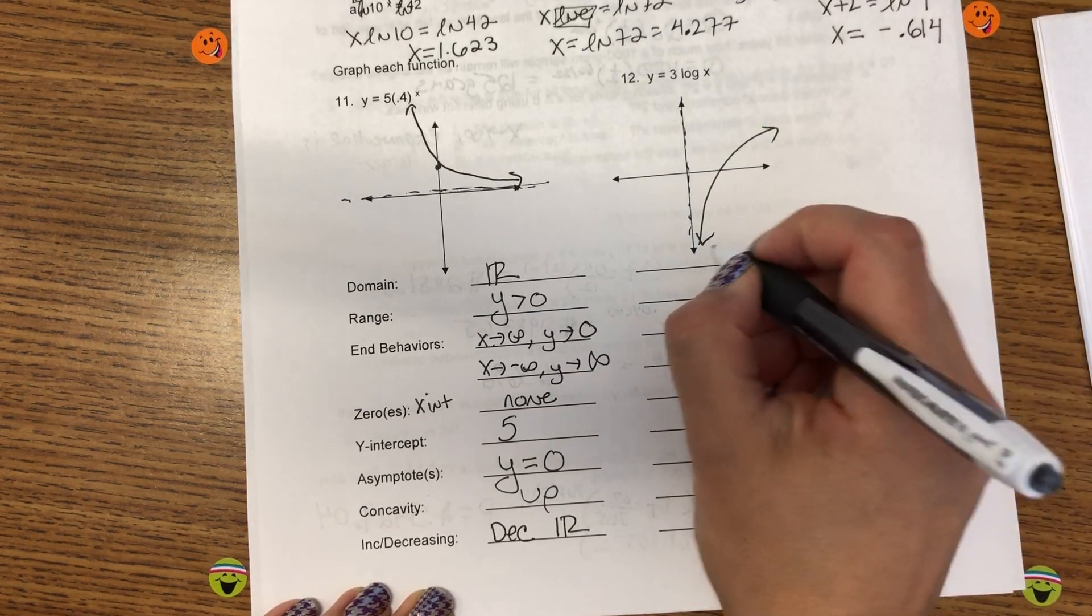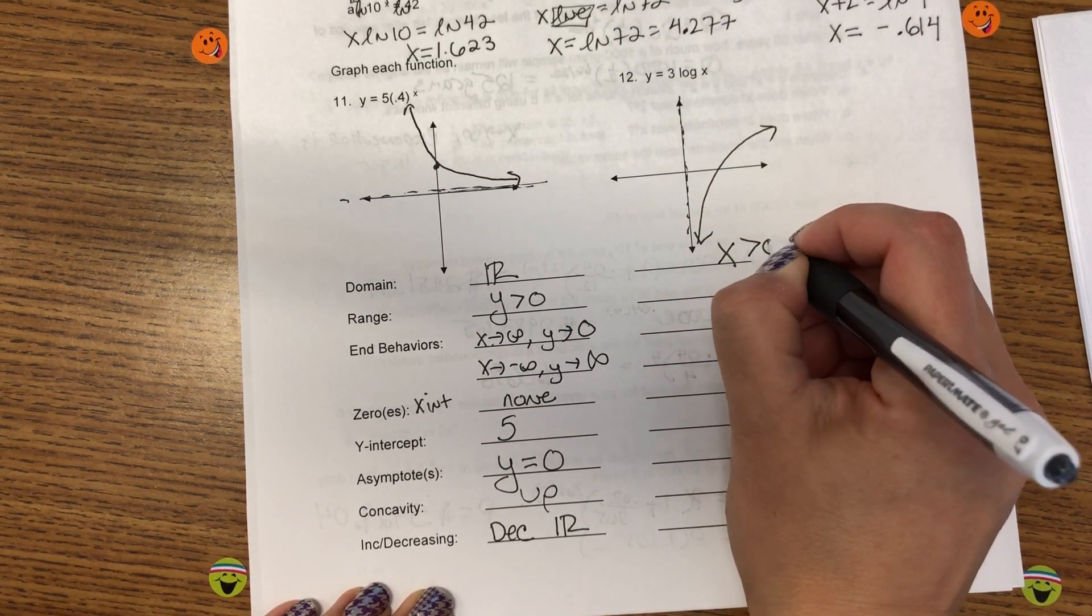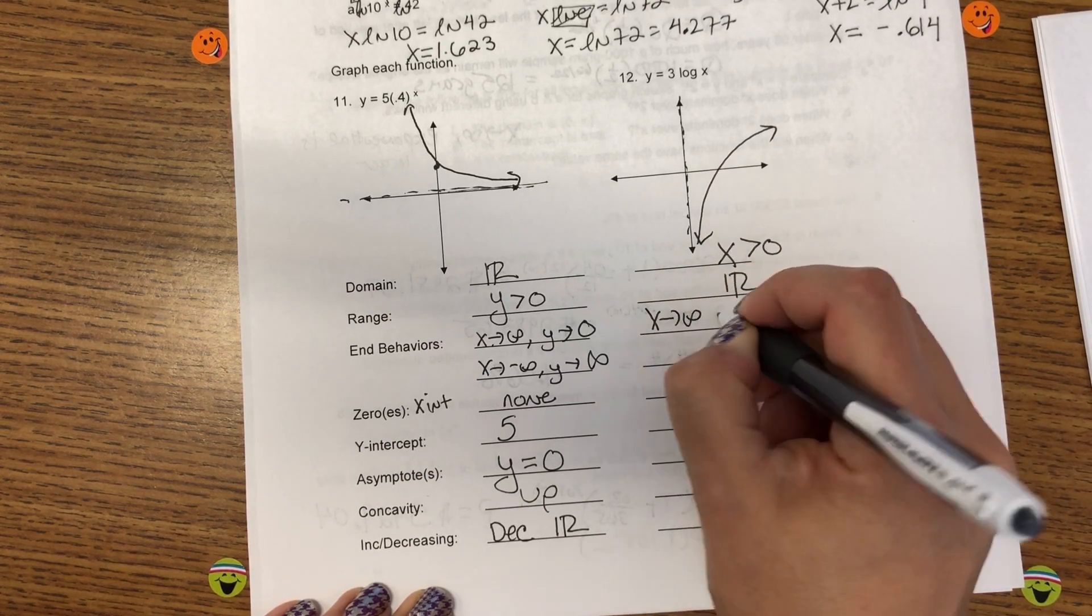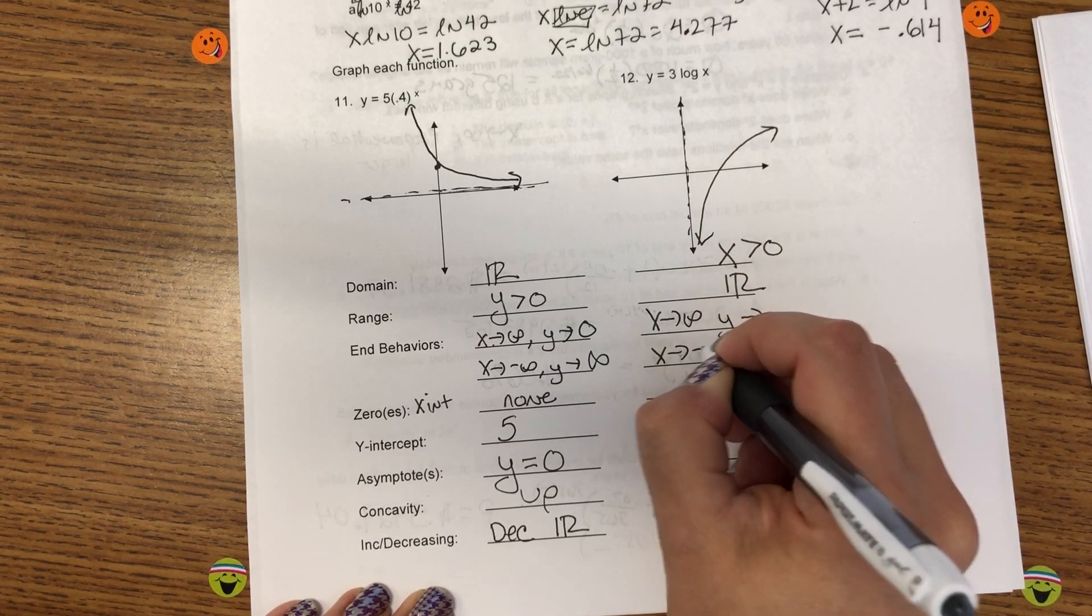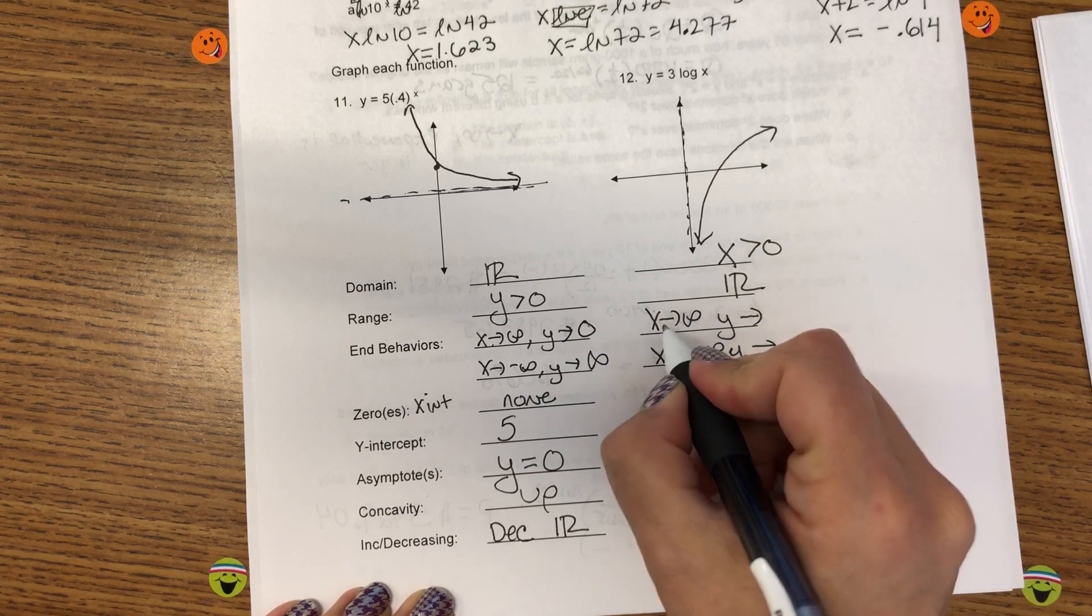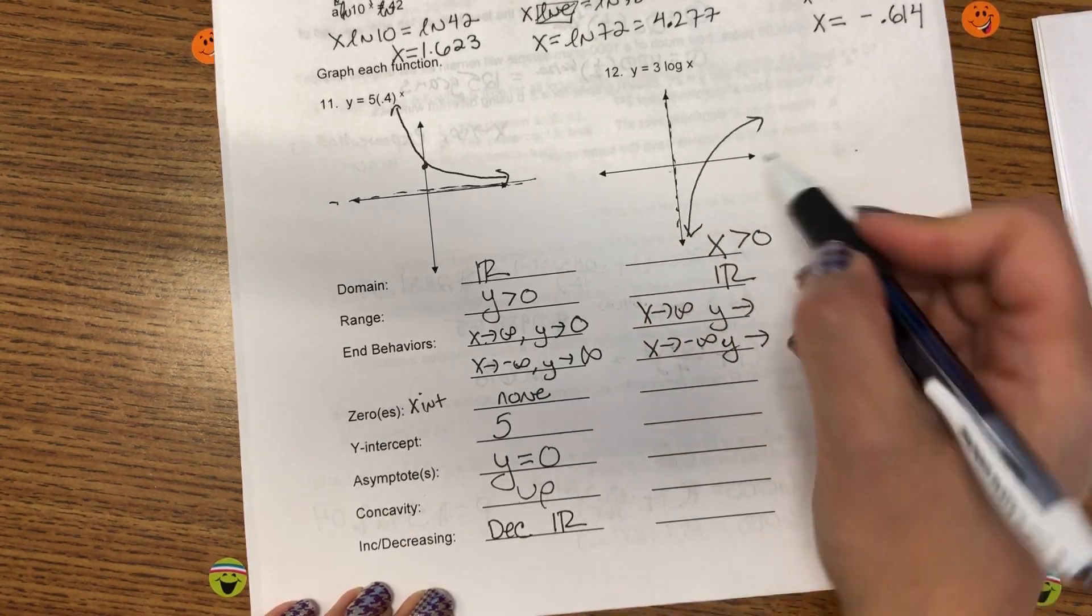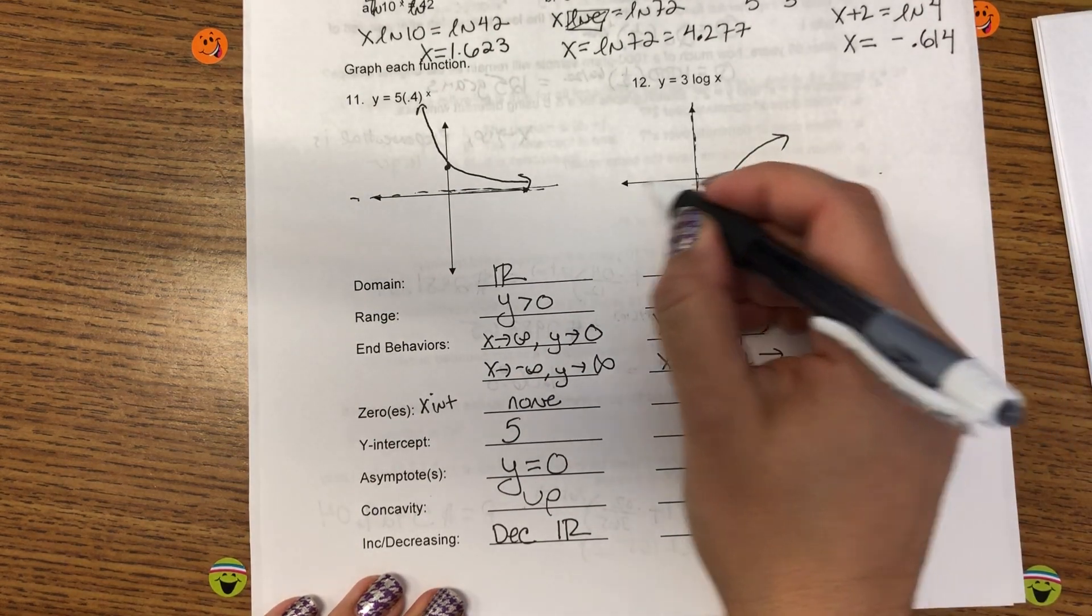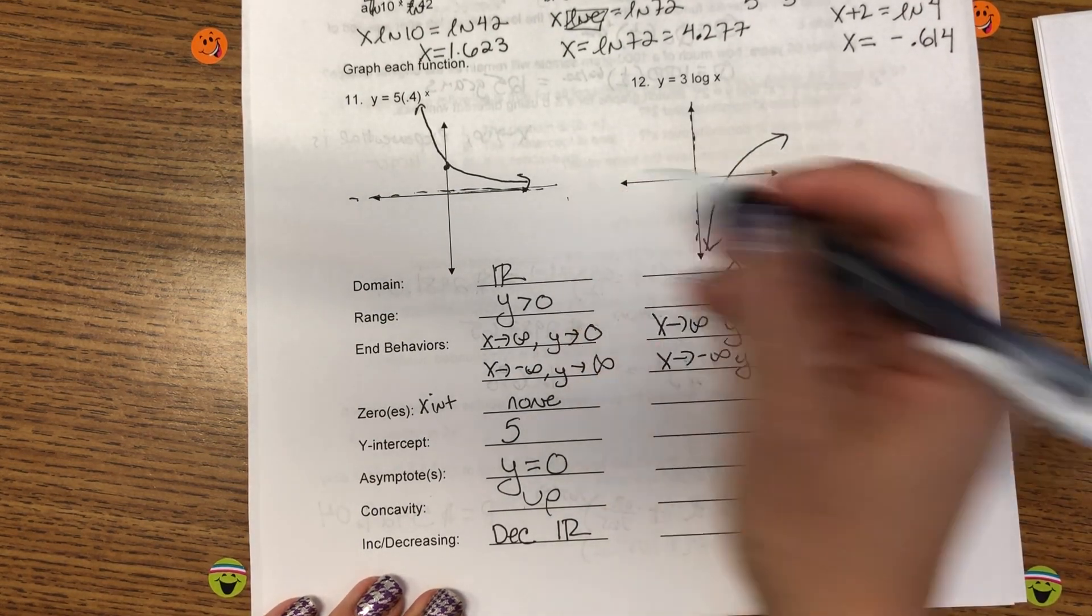The asymptote is the line, y equals 0. It's bending in an upward direction, so concavity is up. And this entire graph is decreasing on all real numbers. For the logarithm, your domain is x is greater than 0. And the range is all reals.